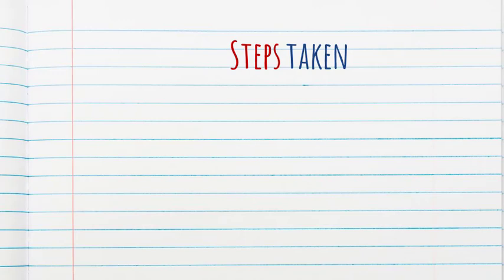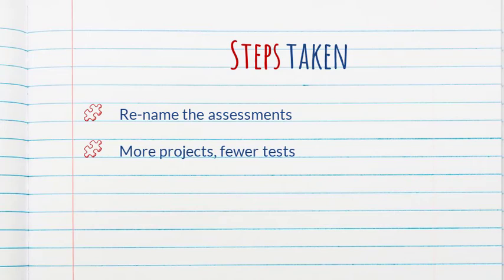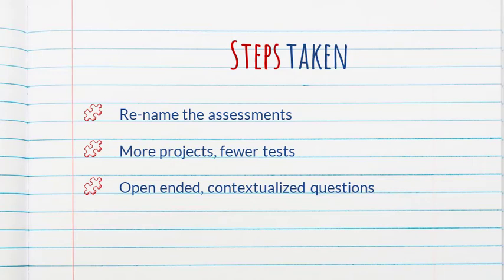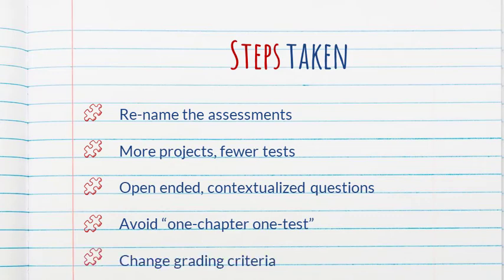So let's look at all the changes they made. They changed the names of the assessments, incorporated more projects and reduced the number of tests, changed questions to be open-ended and contextualized, avoided doing one test per chapter where possible, and of course changed the grading criteria. All of these steps are pieces of a bigger puzzle — just by themselves they are not enough. Let's unpack them one by one.